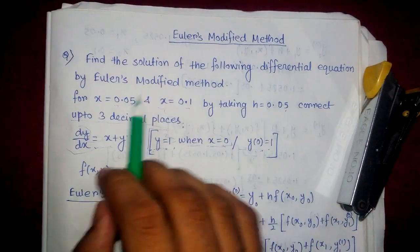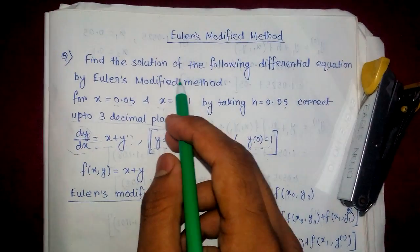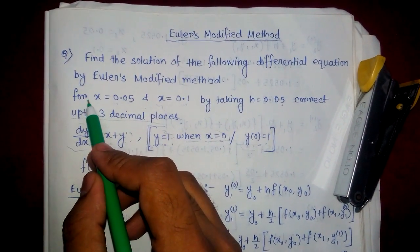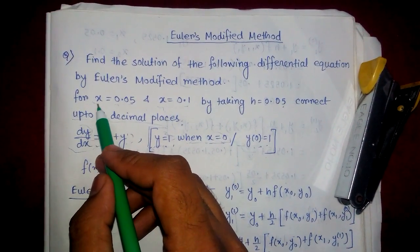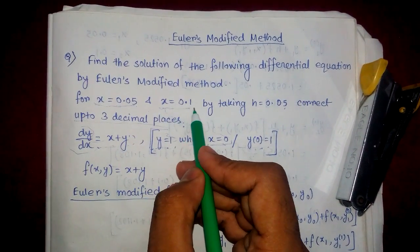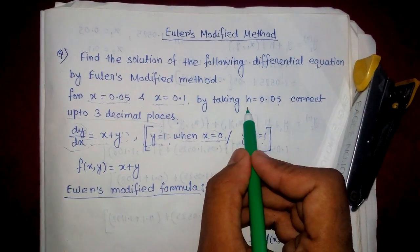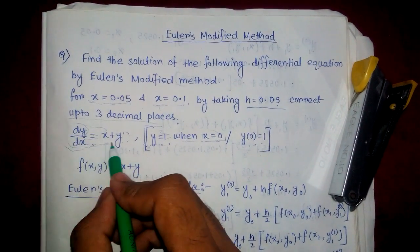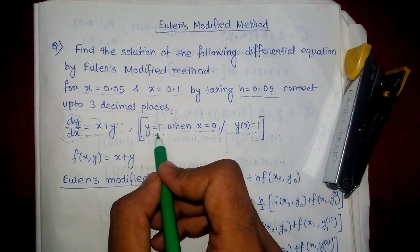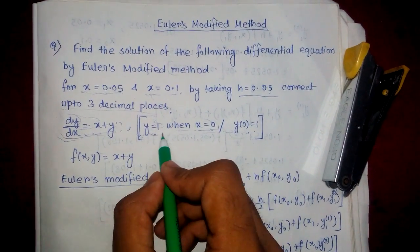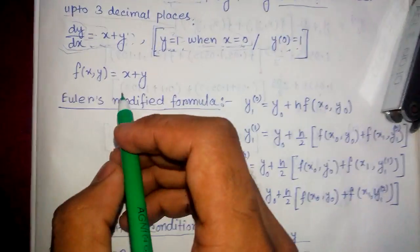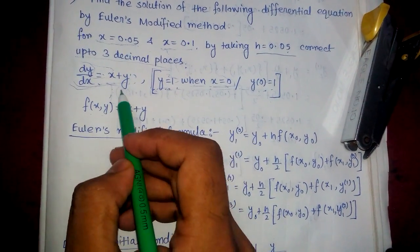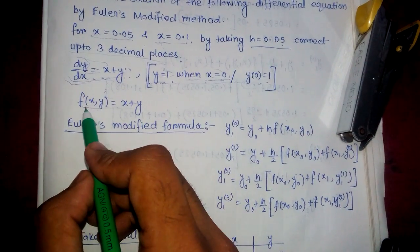So if you watched my previous video, you will understand that we have to calculate the value of y for x equals 0.05 and x equals 0.1, with h equals 0.05. We define our function f(x, y) equals x plus y, and the initial condition is x naught equals 0, y naught equals 1.